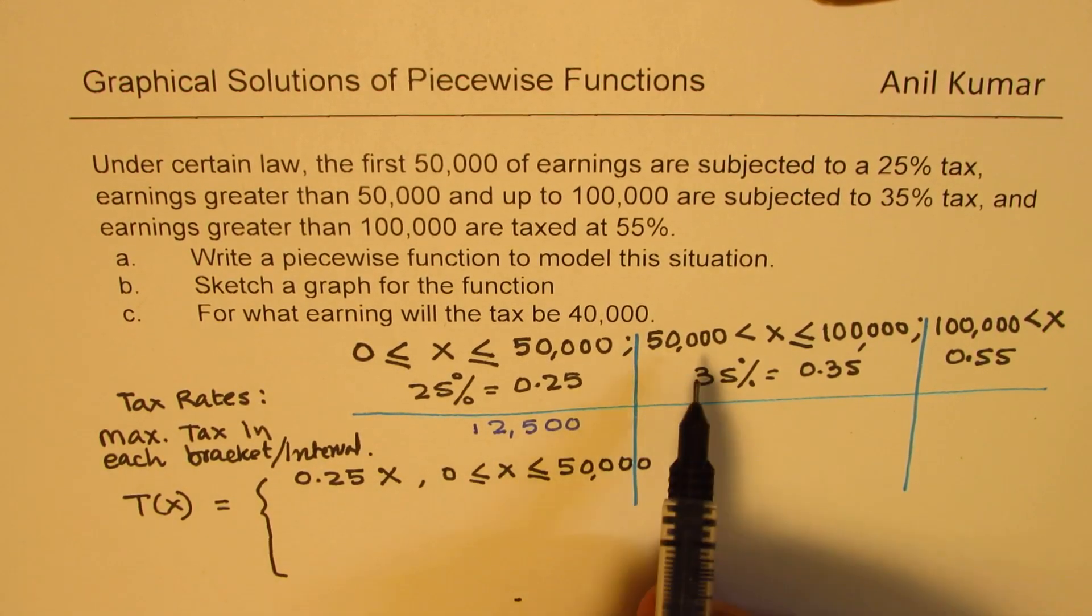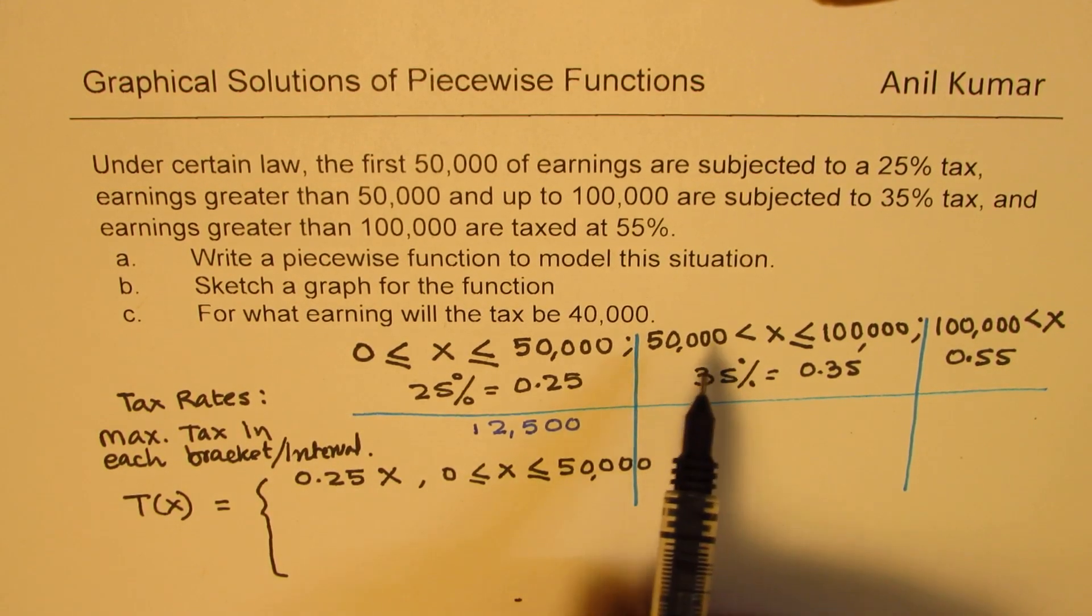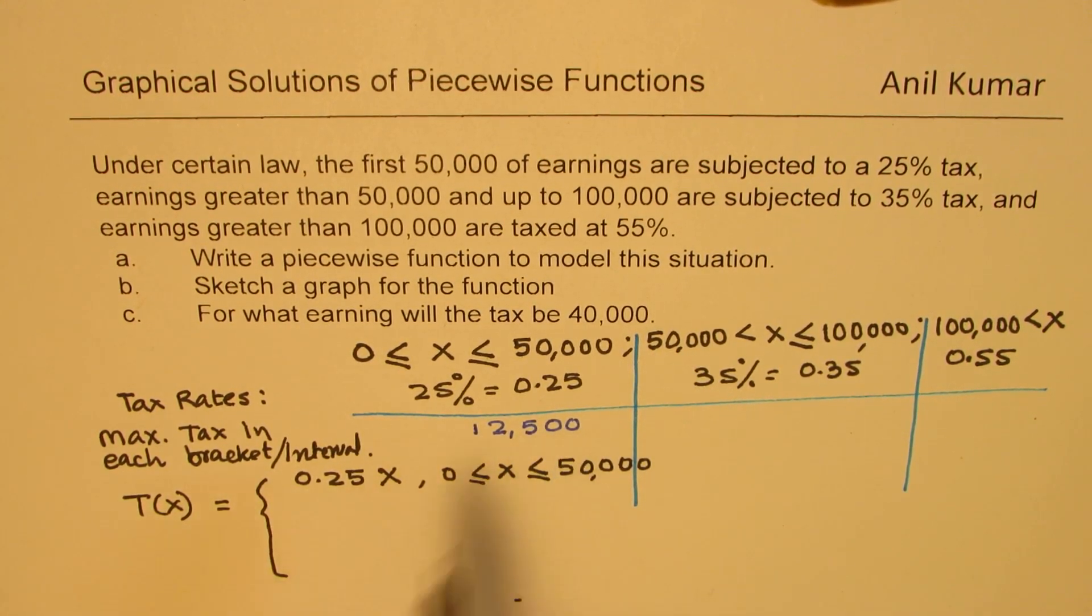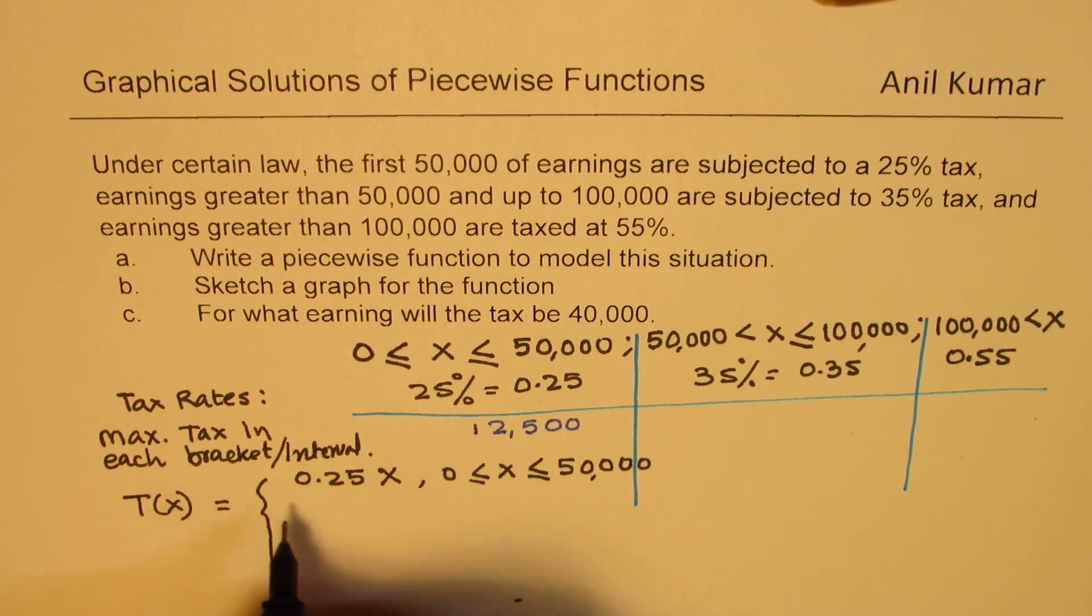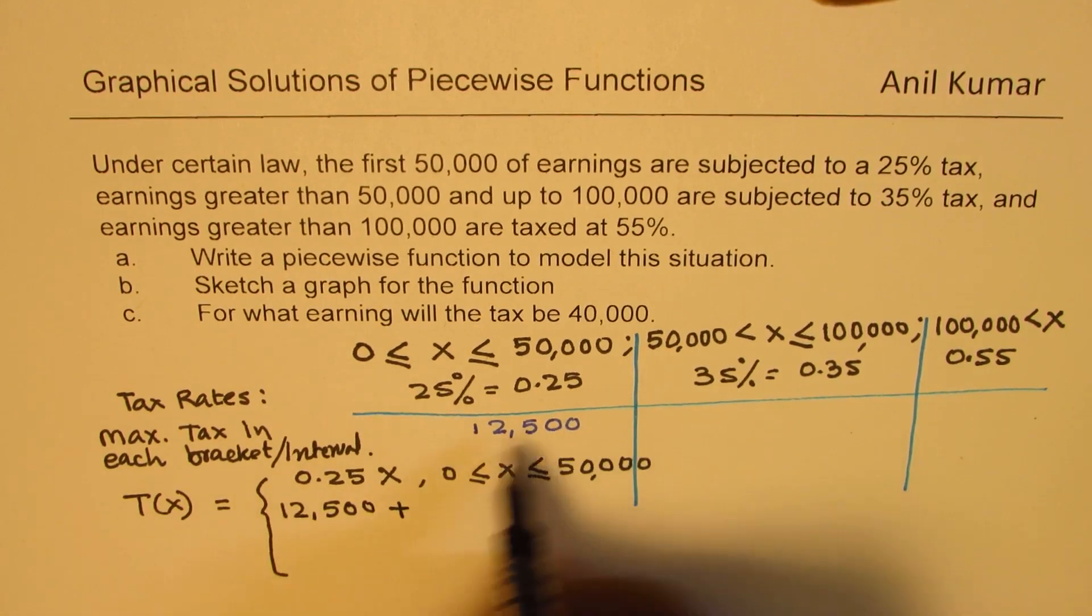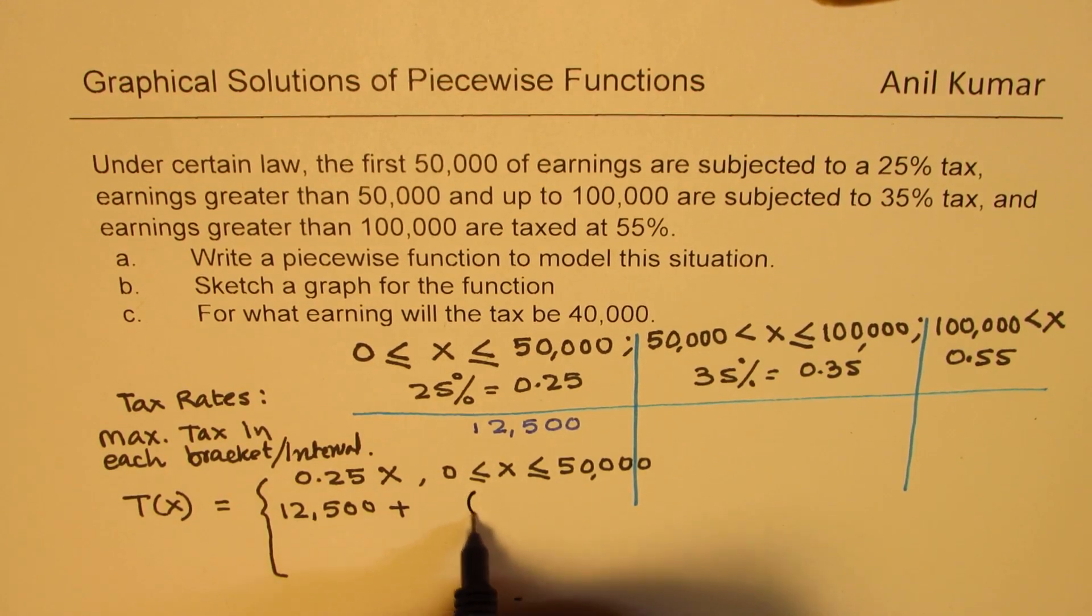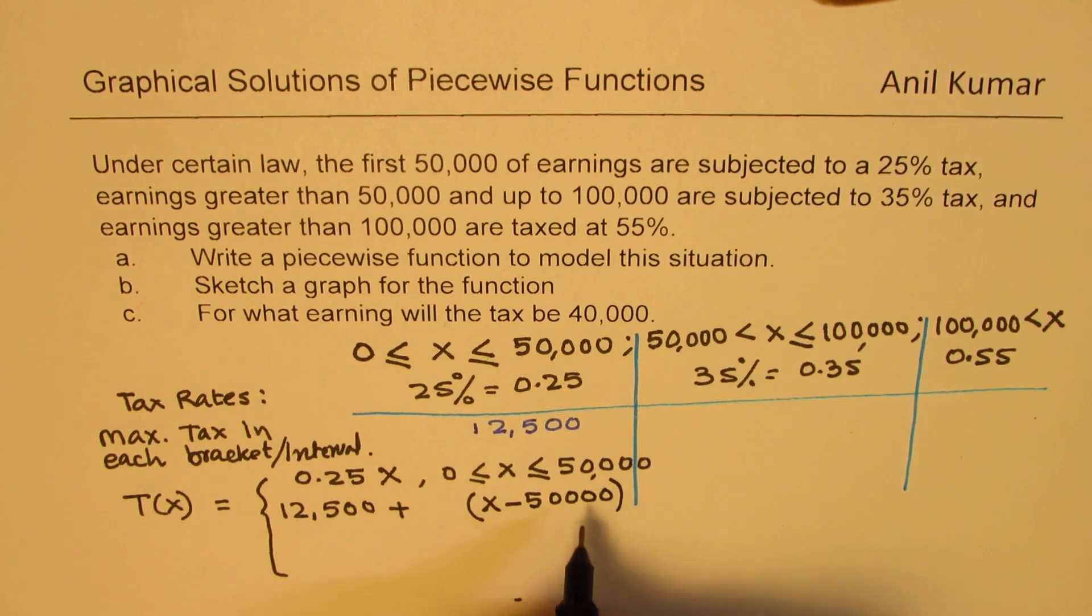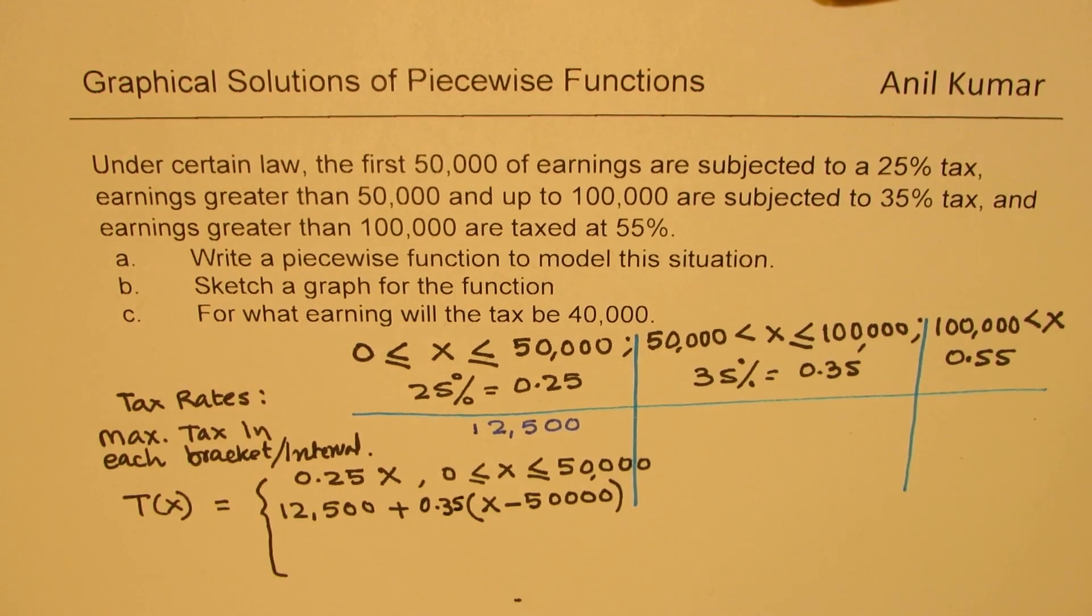Now as soon as you cross this bracket and the earnings are more than 50,000, you have already paid tax on the first 50,000, and that is 12,500. So the first 50,000 will be taxed at 12,500. And on this balance amount, which is above 50,000, which is X minus 50,000, there will be 35% tax.